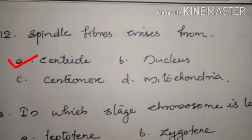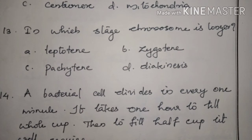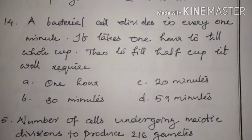In which stage is the chromosome longer? Answer: Option A, leptotene. Which organelle is associated with spindle formation? Answer: Option A, centriole.